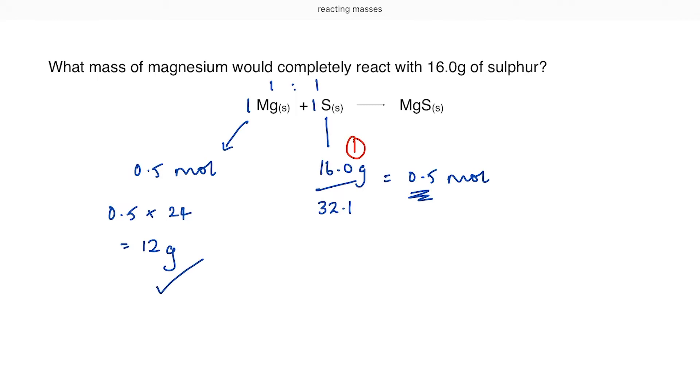So let me go through that very quickly again. Step number one is to work out the number of moles of whatever we have the information for, in this case, sulphur. Step number two is to use the ratio. And step number three is to convert my new number of moles back into a mass. Moles, ratio, mass. It's as straightforward as that.